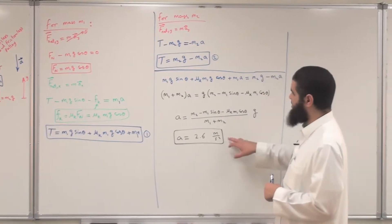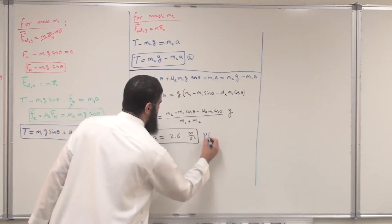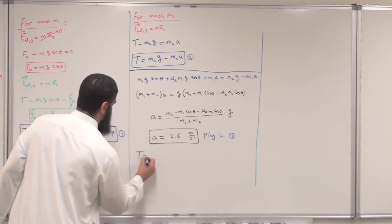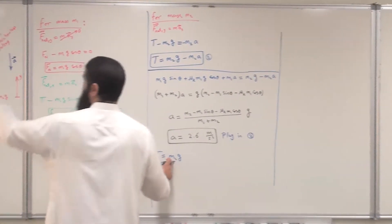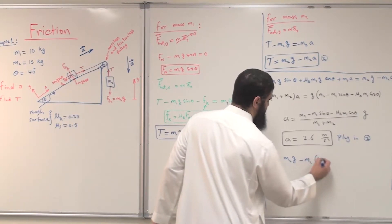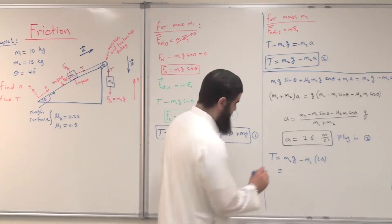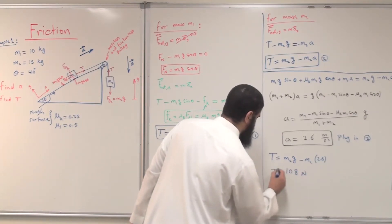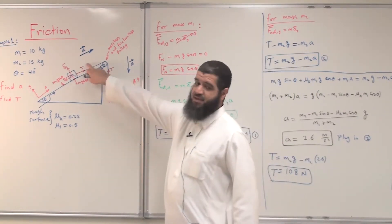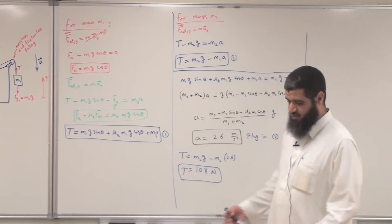For part two, finding the tension: now that we know the acceleration, I plug it into Equation 2. T = m2·g − m2·a = (15 kg)(9.8 m/s²) − (15 kg)(2.6 m/s²). This gives a tension of 108 Newtons, and this is the same tension throughout both portions of the string.